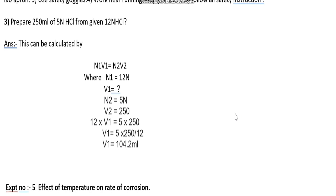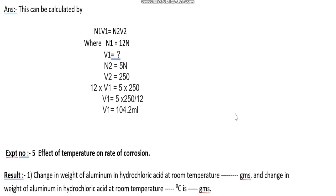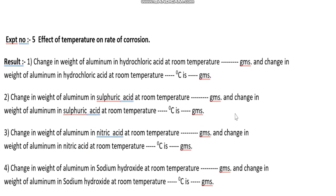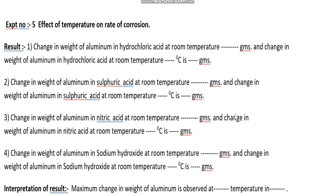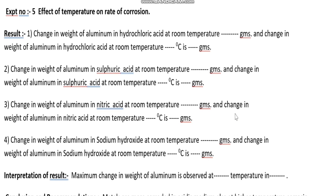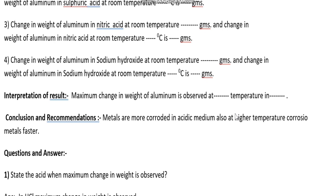Experiment number five: effect of temperature on rate of corrosion. For the result, you have to write the change in weight of aluminum in hydrochloric acid at room temperature in grams, that means before corrosion, and then change in weight after changing the temperature. Write down the result for all types of acid and base: hydrochloric acid, sulfuric acid, nitric acid, and sodium hydroxide. Interpretation of result: note the maximum change in weight of aluminum observed at which temperature and by how much grams.